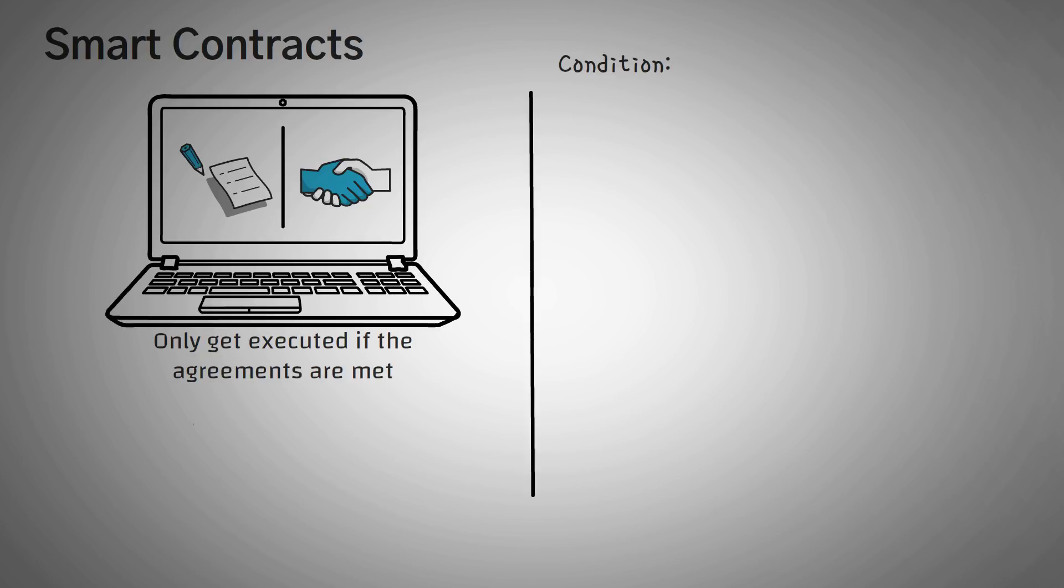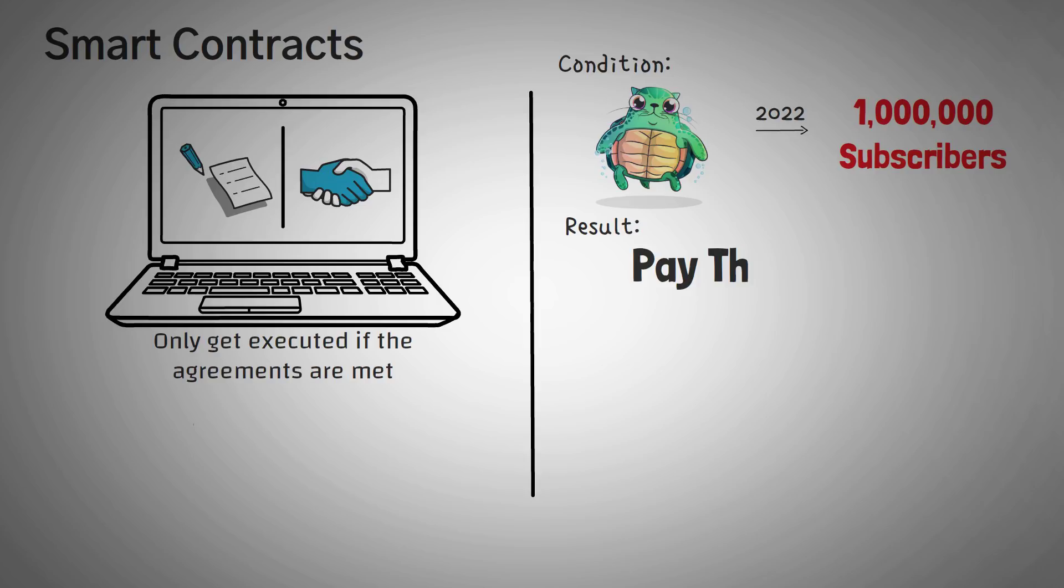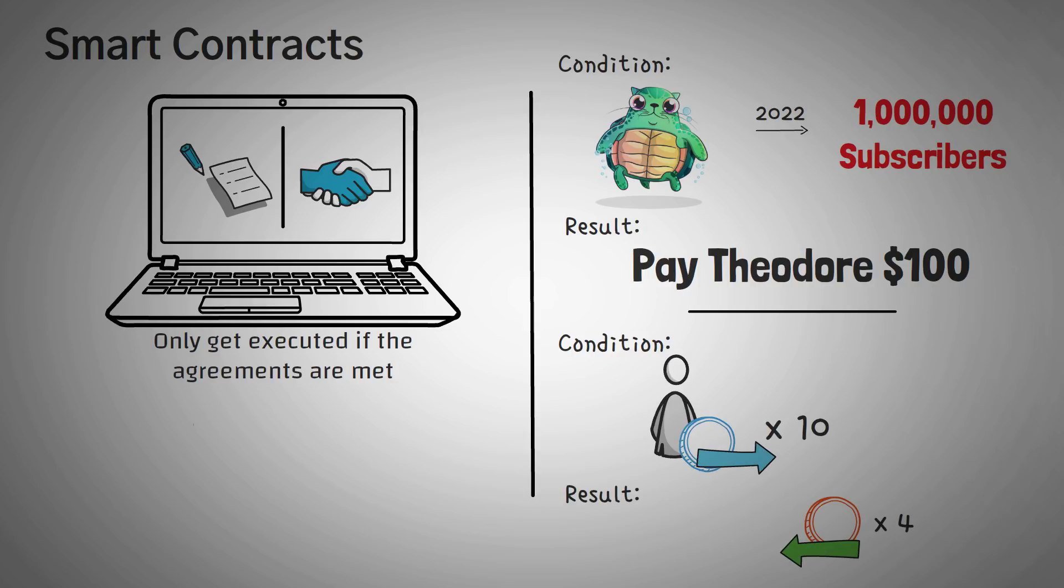For example, we could say something like, if Whiteboard Crypto doesn't have 1 million subscribers by 2022, pay Theodore $100. Oh, by the way, my name is Theodore. We could also write a smart contract that allows us to swap coins and tokens. For example, if John gives us 10 Z tokens, give him 4 Y tokens.